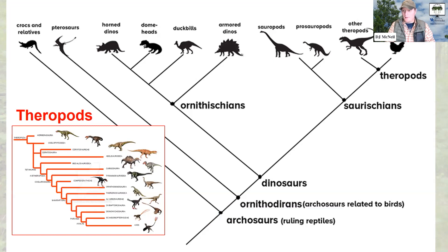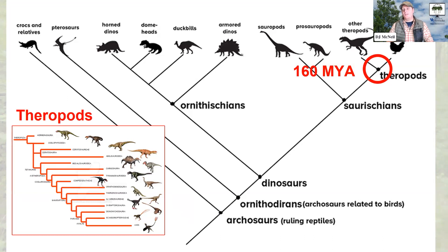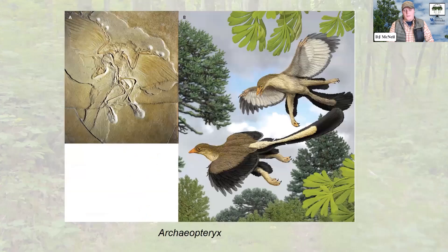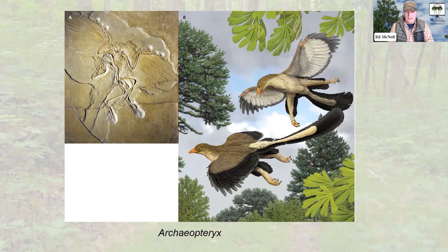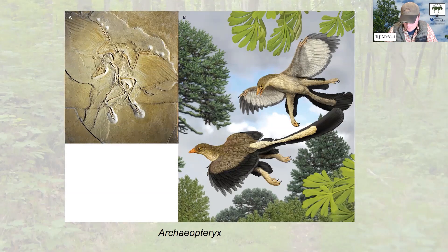Birds and other dinosaurs split apart about 160 million years ago from a group that we now call the theropods. Theropod dinosaurs split apart about 160 million years ago — it includes things like birds, but also like Tyrannosaurus and Carnotaurus. One of the first inklings the scientific community had that this might be the case was the discovery of a bird-like dinosaur called Archaeopteryx.